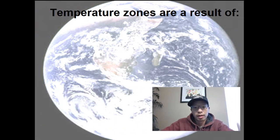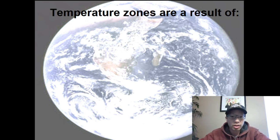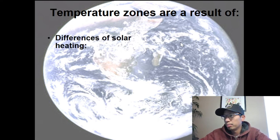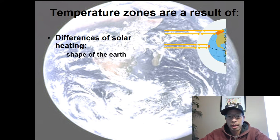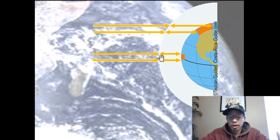Different parts of the earth get different amounts of sunlight, and that's what creates different temperature zones. If you've traveled near the equator — South America, parts of Asia, or even the southern U.S. — it's a lot warmer and more humid than northern parts of North America like Canada. That's because of differences in solar heating. When the sun's rays hit our curved planet, they hit it differently because the earth is a sphere.